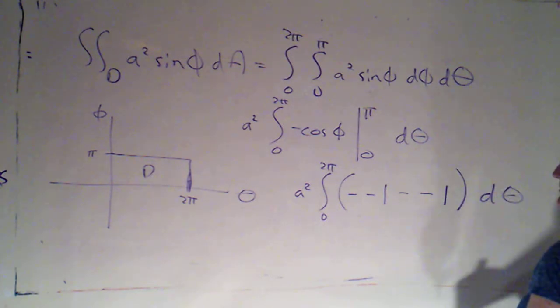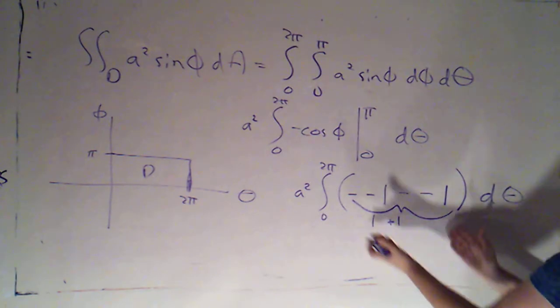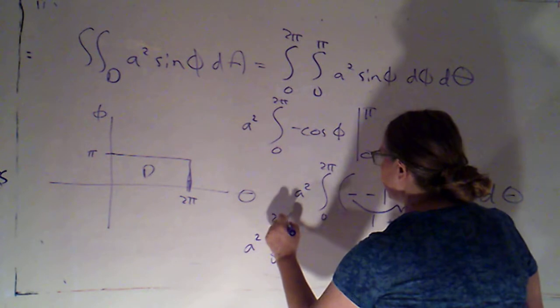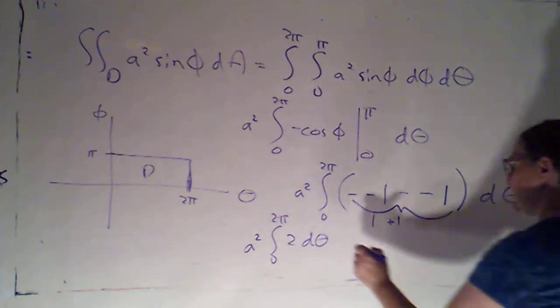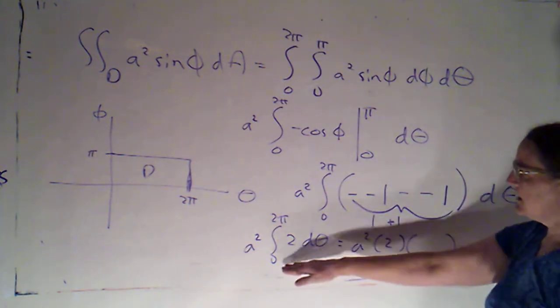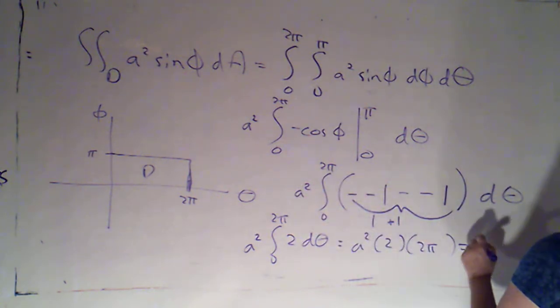So this just becomes one plus one, so that becomes two. So we've got a squared integral from zero to two pi of two d theta. Of course, if we're integrating a constant, we're going to get a squared times that constant times the length of this interval, which is just two pi. We're going to get four pi a squared.